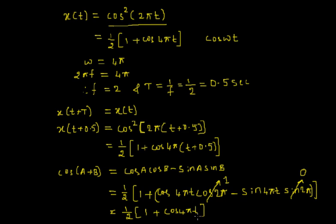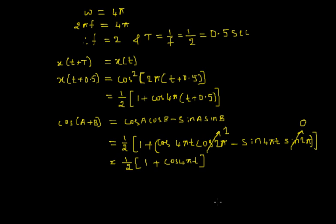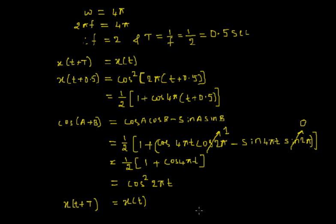This reduces to ½(1 + cos(4πt)), which equals cos²(2πt). Looking closely, this is nothing but the given signal x(t). We have therefore proved that x(t + T) = x(t), which means the given signal is periodic in nature with fundamental period T = 0.5 seconds.